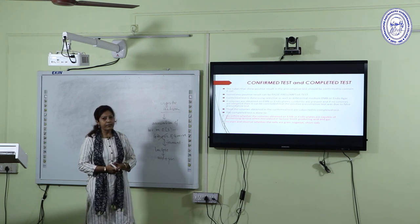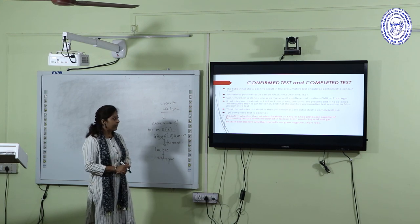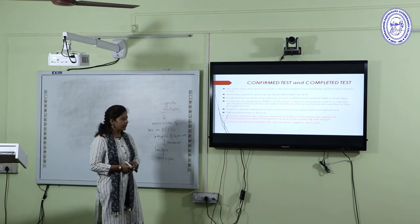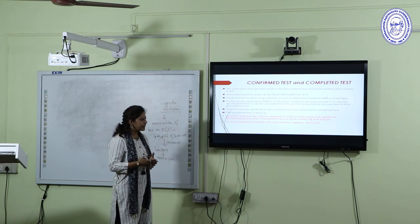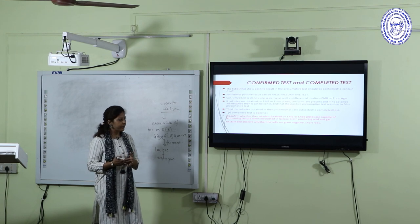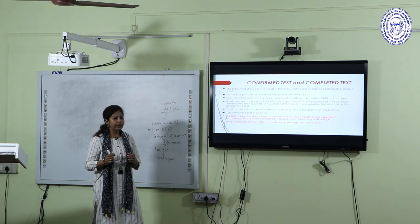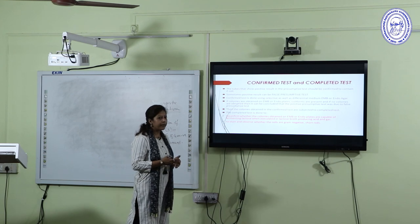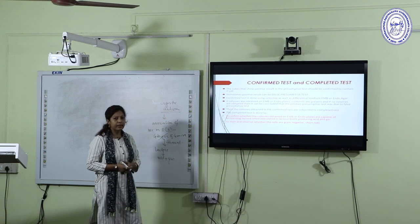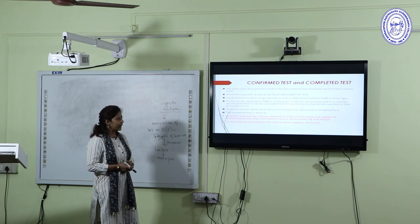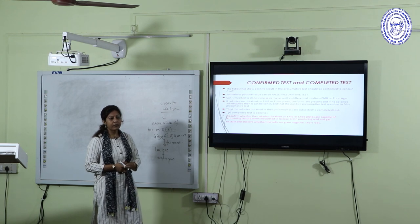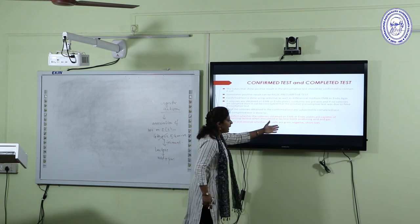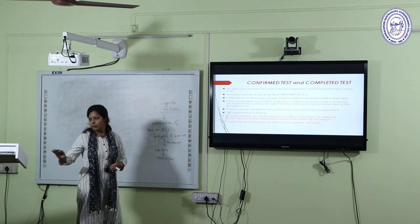The completed test is the final level of testing, performed to reconfirm that the colonies growing on the Endo or EMB agar plates are capable of fermenting lactose producing acid and gas, and that the organisms are gram negative short rods. Two media are used: lactose broth containing a Durham's tube, and nutrient agar slant. Both are inoculated with colonies from the confirmed test plates. If the Durham's tube shows air bubbles and the gram stain shows gram negative short rods, coliforms are confirmed.